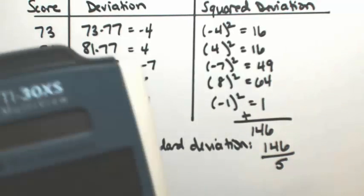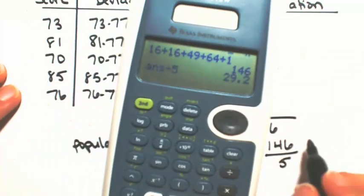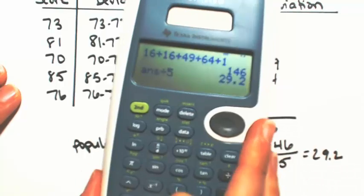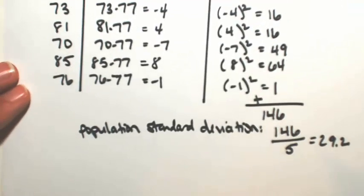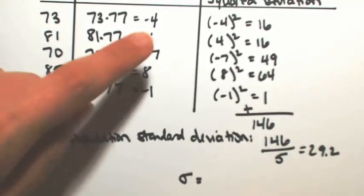So dividing that out, 146 divided by 5. This average is 29.2. So if I am the standard deviation of the population, we use this Greek notation called sigma. This is going to equal, remember how we squared everything?